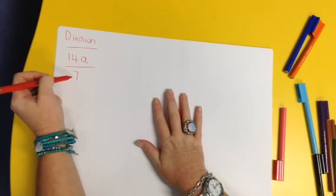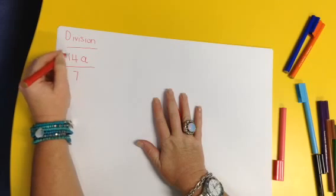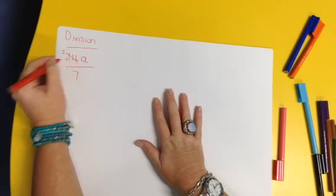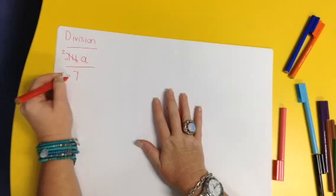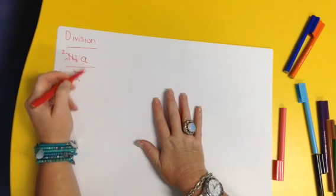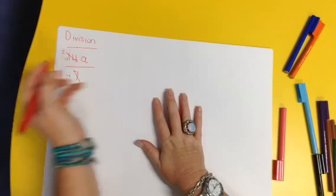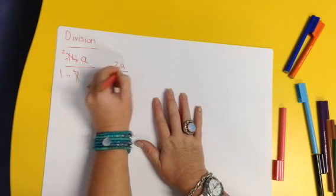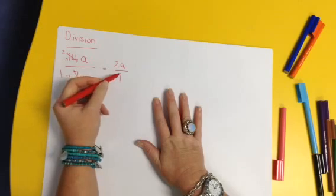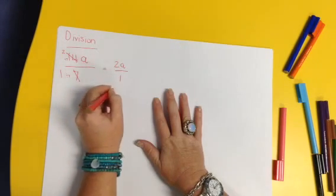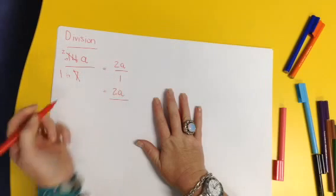The first thing we do is bring our numbers down to the simplest form. So we say, well, what can go into 14 and 7? 7 can. So 7 goes into 14 twice, so we divide that by 7, and if we do that, we're going to divide that by 7. 7 divided by 7 is 1. The a has nothing, no partners. So our answer now is going to be 2a over 1. Now, very important, if anything is over 1, what is it? It's itself. So we've got 2a is our answer.